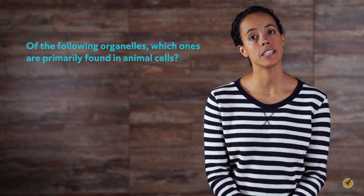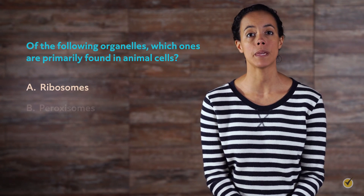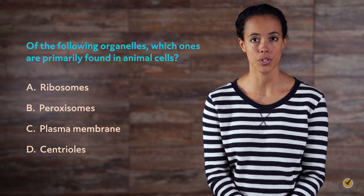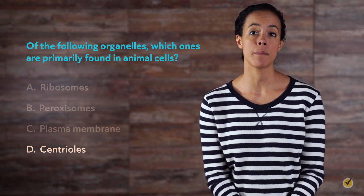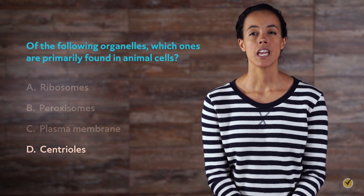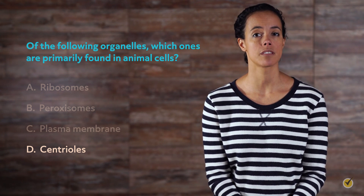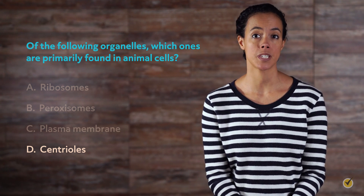Now that we've fully compared and contrasted plant and animal cells, let's go over a review question together. Of the following organelles, which ones are primarily found in animal cells? A) ribosomes, B) peroxisomes, C) plasma membrane, or D) centrioles? The answer is D, centrioles. Both plant and animal cells have ribosomes and peroxisomes. Even though plant cells have a cell wall, they also have a plasma membrane like animal cells. With few exceptions, only animal cells have centrioles for mitosis and meiosis.